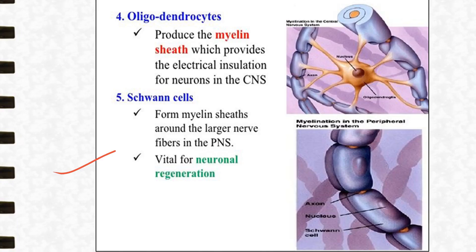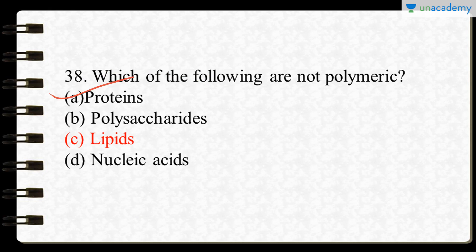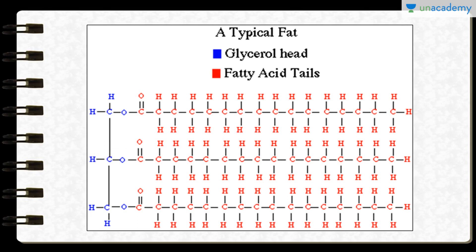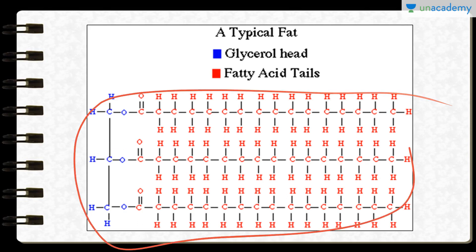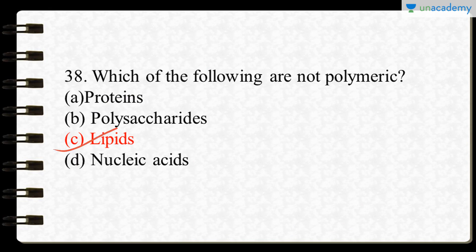The next question asks which of the following biomolecules are not polymeric. Proteins are polymers of amino acids, polysaccharides are polymers of monosaccharides, and nucleic acids are polymers of nucleotides. However, lipids are not polymers — they are simply esters of fatty acids and alcohol, so lipids are not polymeric in nature.